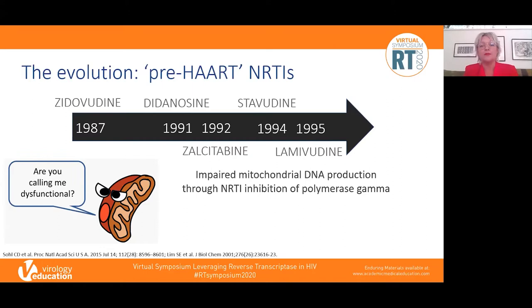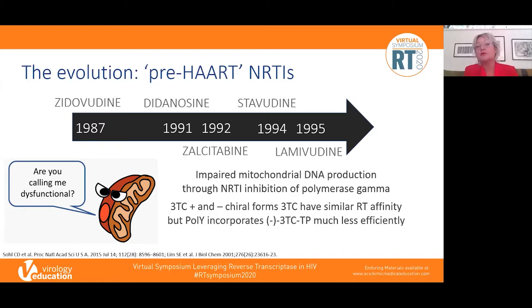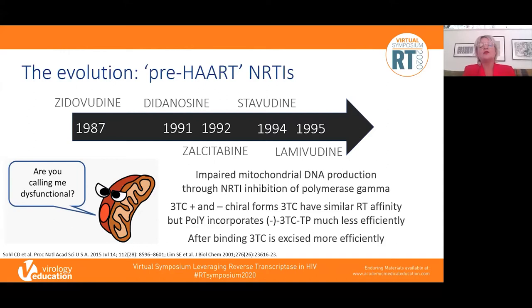Mitochondrial dysfunction is pharmacologically interesting. If you look at the different chiral forms of the same drug — taking lamivudine as an example — the negative chiral form has much less affinity for polymerase gamma than the positive, yet the same impact on reverse transcriptase. This is the version developed as the 3TC we know. Also important is how well the NRTI is excised from polymerase: lamivudine is excised much more efficiently than zidovudine, which once bound stays largely stuck.